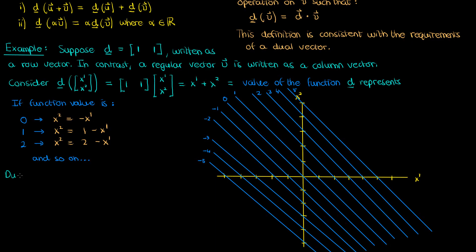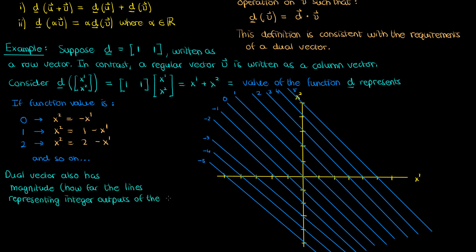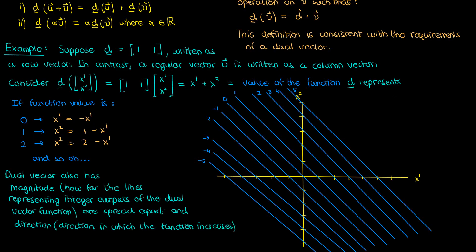If you look closely, the dual vector also has a magnitude and direction. The magnitude represents how quickly it increases — how far the lines of constant integer value are spread apart — and the direction represents the direction in which the function value increases, which in this case is the northeast direction. But even though the dual vector has a magnitude and direction, it's a different kind compared to your regular arrow vector.